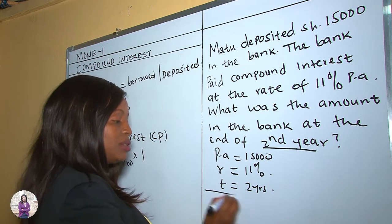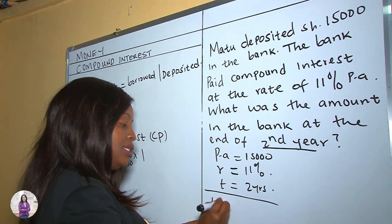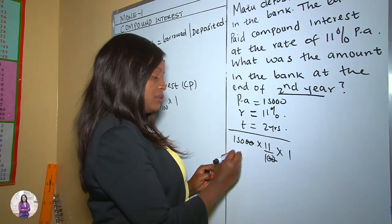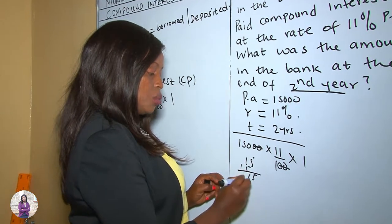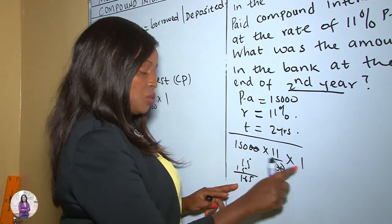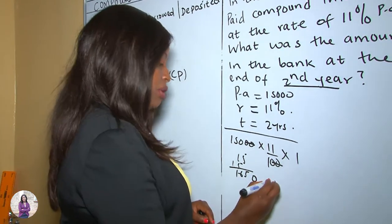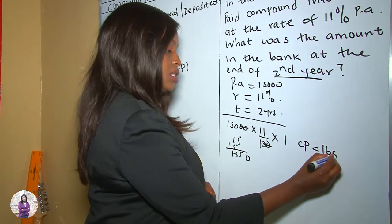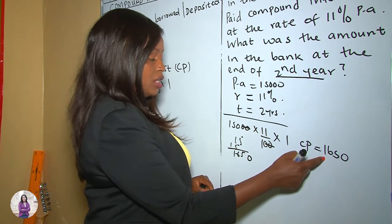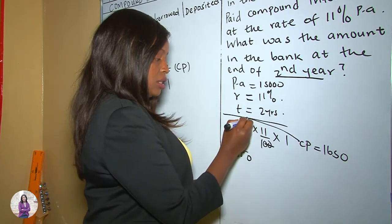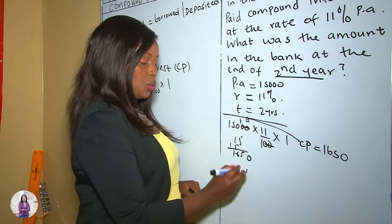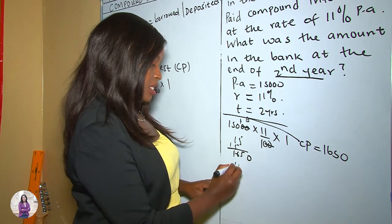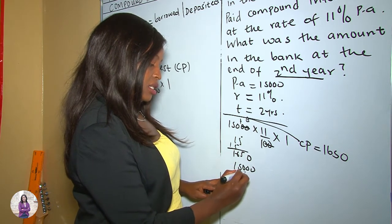For year one: CI = $15,000 × 11/100 × 1. That gives $15,000 × 11 = $165,000, divided by 100 = $1,650. So the compound interest for the first year was $1,650. This is then added to the principal amount: $15,000 + $1,650 = $16,650, which becomes the principal for the second year.